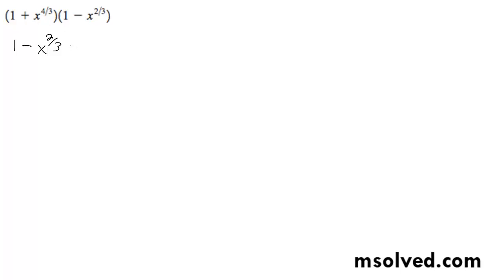And then we move on to our second part. So plus x raised to the 4 thirds times 1, which is just x raised to the 4 thirds, minus.